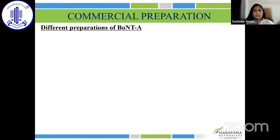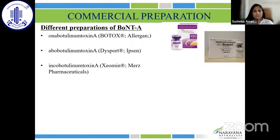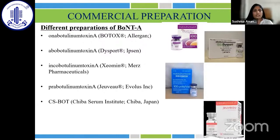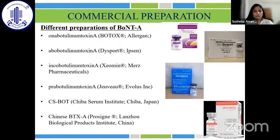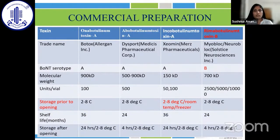There are different commercial preparations of botulinum toxin type A. To name a few: onabotulinum toxin marketed as Botox by Allergan; abobotulinum toxin marketed as Dysport by Ipsen; incobotulinum toxin marketed as Xeomin by Merz Pharmaceuticals; prabotulinum toxin A marketed as Jeuveau by Evolus Inc.; and Chiba Serum Institute's preparation, and Chinese botulinum toxin marketed as Prosigne. Botulinum toxin type B is marketed as Myoblock or Neuroblock by Solstice, and it is the rimabotulinum toxin.